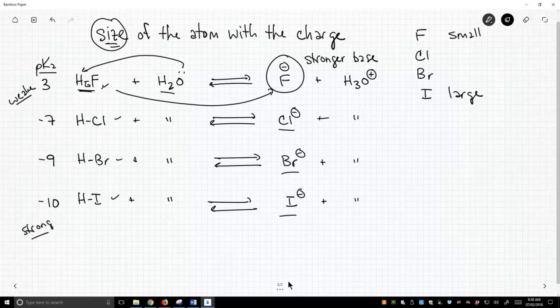So HF, when it's deprotonated, forms a conjugate base that's a relatively strong base. Why? Because this is a small, compact anion, and that negative charge is highly concentrated on that tiny fluoride. And that's unstable. Unstable means it's reactive. Reactive how? Well, we're talking about the base, so it's more reactive as a base. It is a stronger base.